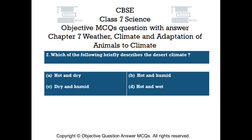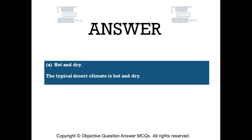Question number 2. Which of the following briefly describes the desert climate? Option A — hot and dry. Option B — hot and humid. Option C — dry and humid. Option D — hot and wet. The right answer is Option A: hot and dry. The typical desert climate is hot and dry.